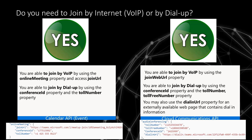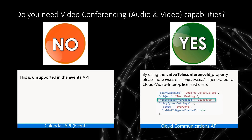Do you need to join by internet, voice over IP, or by dial-up? The answer is yes to both APIs on this one. Whether you're using the calendar API or the cloud communications API, you're able to join by all these means. You can see the conference ID and phone number on the calendar API — the toll and toll-free number — and on the cloud comms option as well, along with the provided ID. Do you need to integrate video conferencing audio or video capabilities? That is not supported inside the events API. It is available in cloud comms, but you do need a cloud video interop license in order to have that video conference capability.